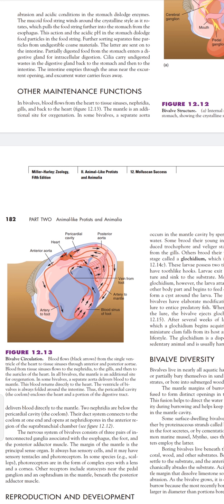Next, the excretion process is also a maintenance function. Two nephridia are present below the pericardial cavity, which is called the coelom. The duct system connects to the coelom at one end and it opens at nephridiopores in the anterior region of the suprabranchial chamber. This is also a maintenance function in Bivalvia related to excretion.